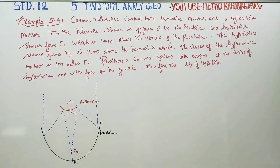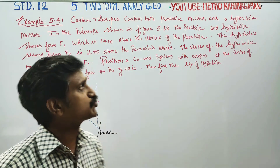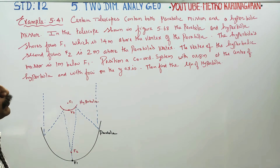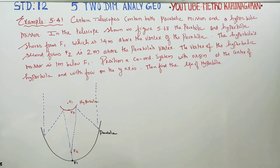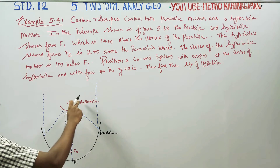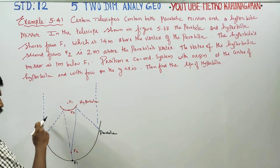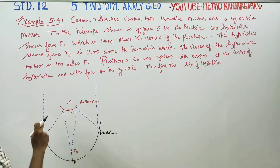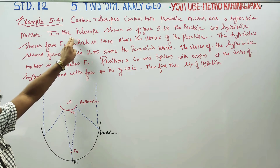Dear Tamilnadu Standard students, I am Metro Karanagaran. In example 5.41, certain telescopes contain both a parabolic mirror and a hyperbolic mirror. One hyperbolic mirror and one parabolic mirror together make one telescope.